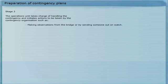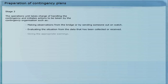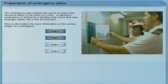The operations unit takes charge of handling the contingency and initiates actions to be taken by the contingency organisation, such as making observations from the bridge or by sending someone out on watch, evaluating the situation from the data that has been collected or received, giving the appropriate warnings, calling a staff meeting, and getting crew members to muster at their stations.